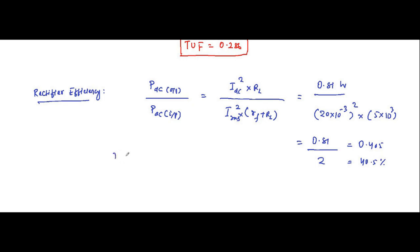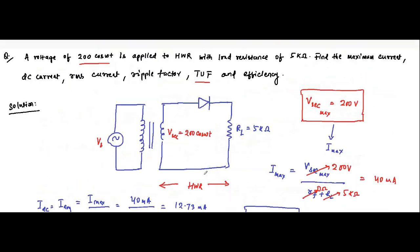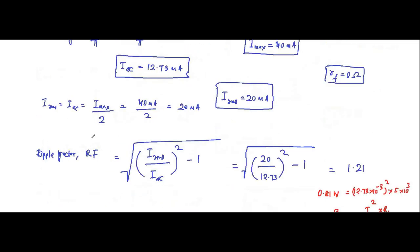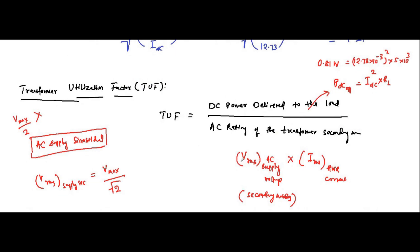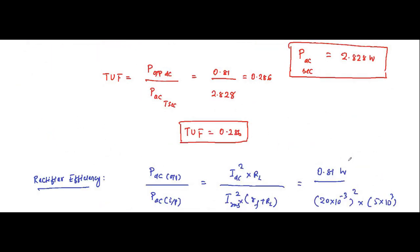The half wave rectifier efficiency will always be around the 40 percent mark. This was a very good question which touched upon the new concept of transformer utilization factor. The transformer was not given directly in the question — from the TUF term you understand that a transformer is involved, and 200 cos omega t is the voltage across the secondary winding. From that we determined all parameters: maximum current, DC, RMS, ripple factor, transformer utilization factor, and efficiency.